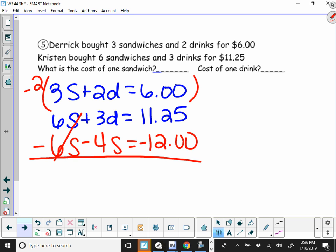So when you do this math, that's going to give you a negative d. And then $11.25 from $12 is going to leave you with negative $0.75. So our drinks are $0.75.